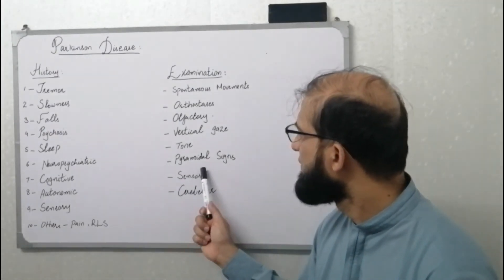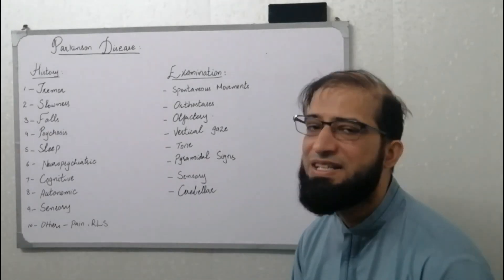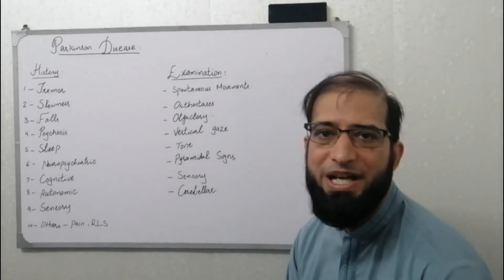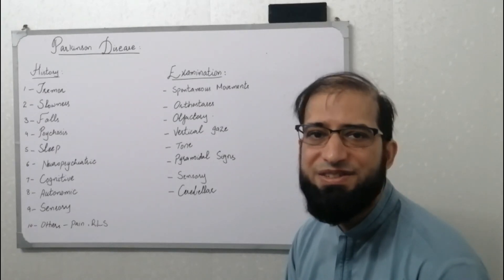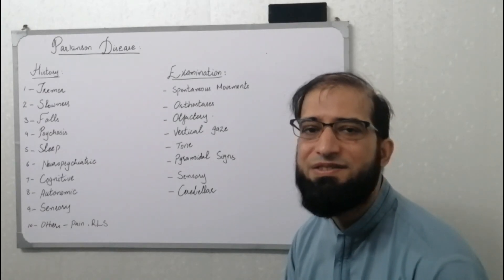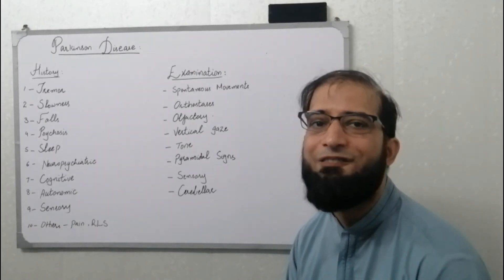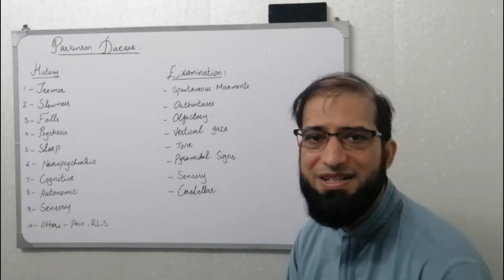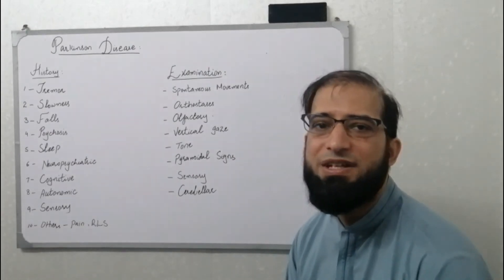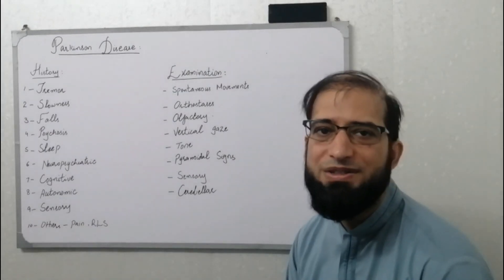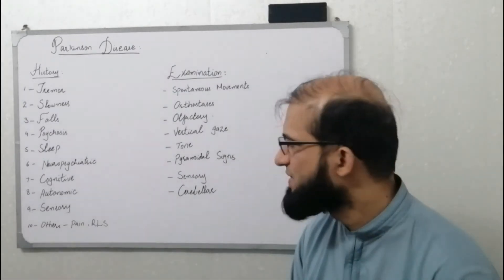Pyramidal signs should be looked for, especially upgoing plantars and hyperreflexia on one side, which would suggest vascular Parkinson's disease or corticobasal degeneration.